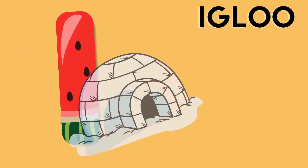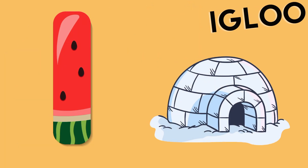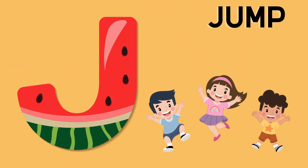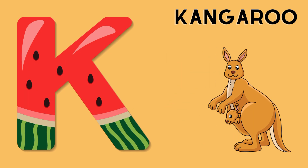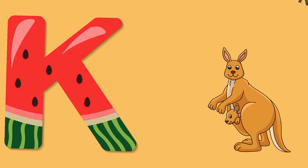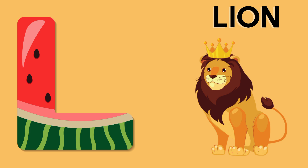I is for igloo, i-i-igloo. J is for jump, j-j-jump. K is for kangaroo, k-k-kangaroo. L is for lion, l-l-lion.